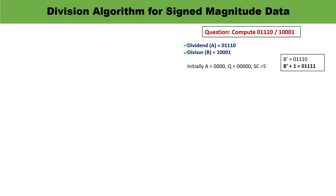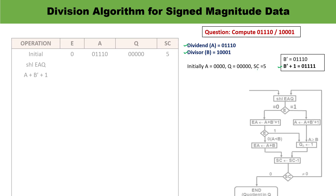Let us calculate B̄+1, because during the division process we need to add this number repeatedly. B̄ is 01110, and when you add 1 you get 01111. The sequence counter is initialized to 5 for this example.